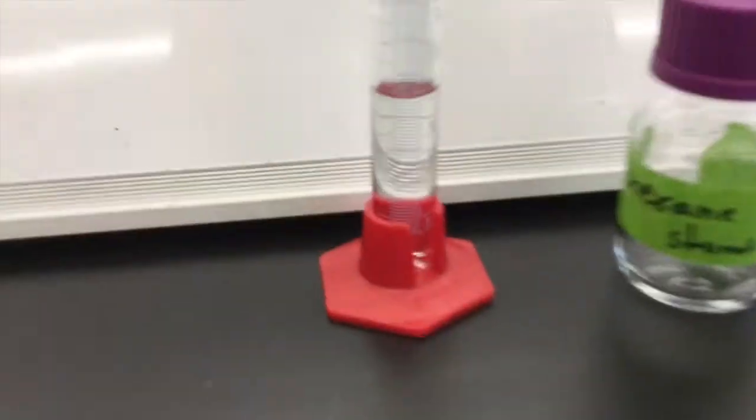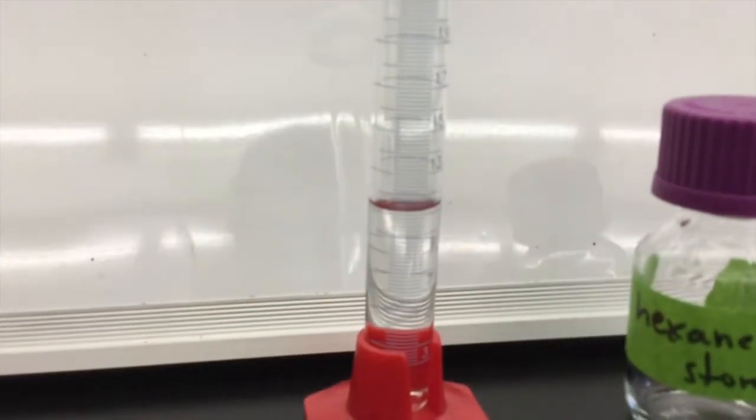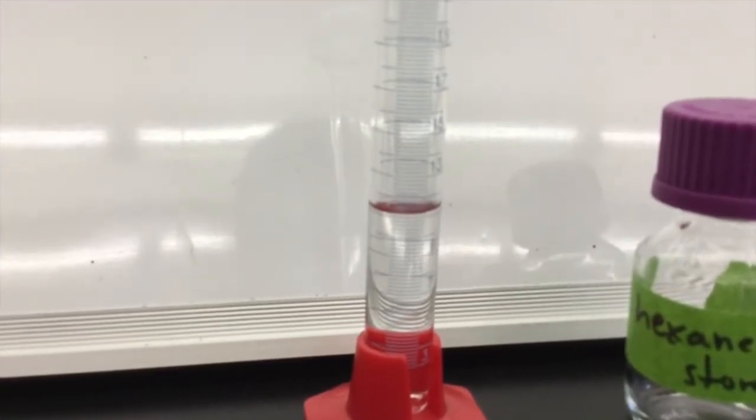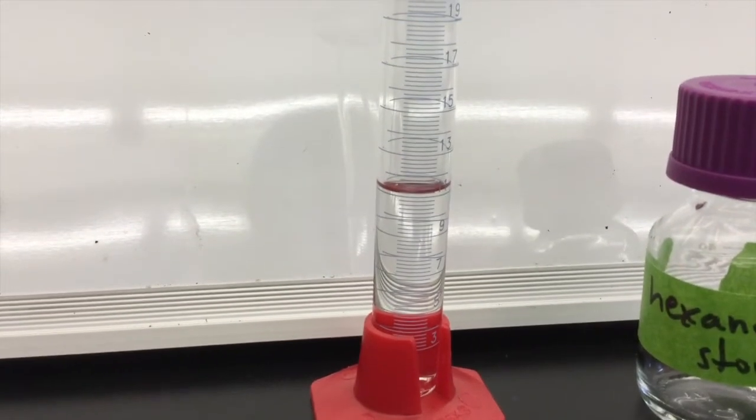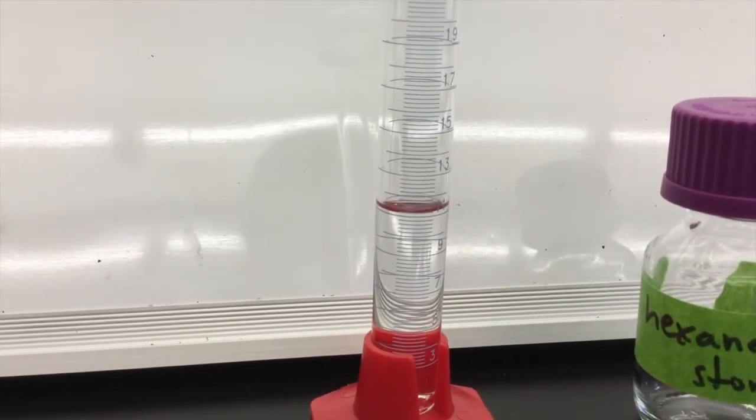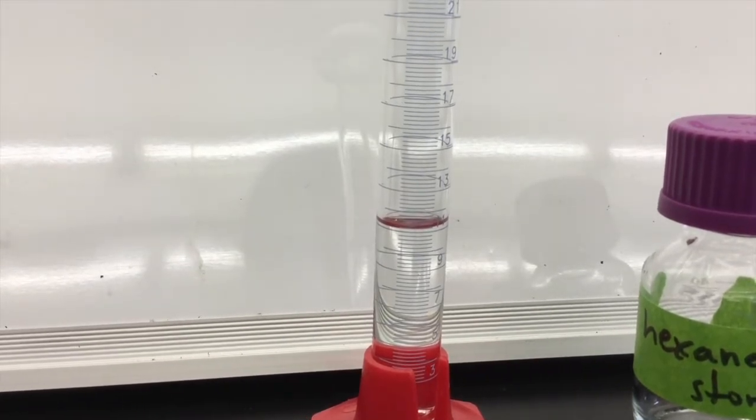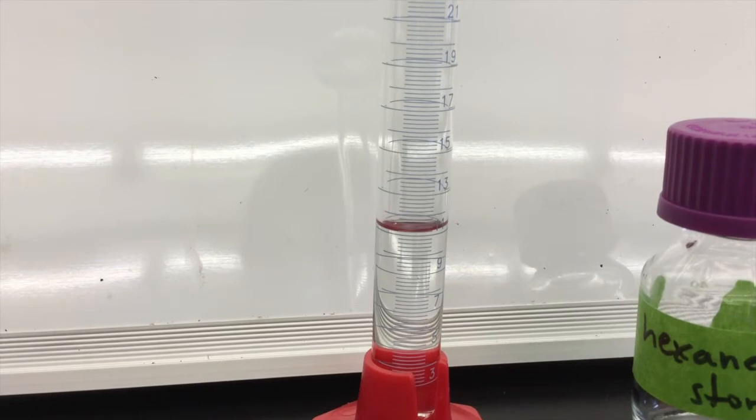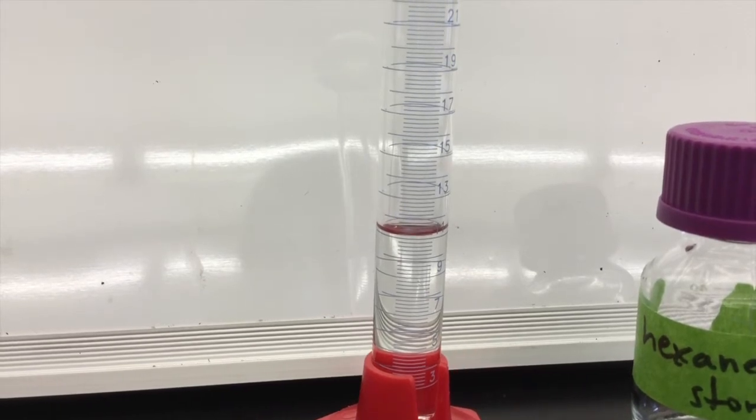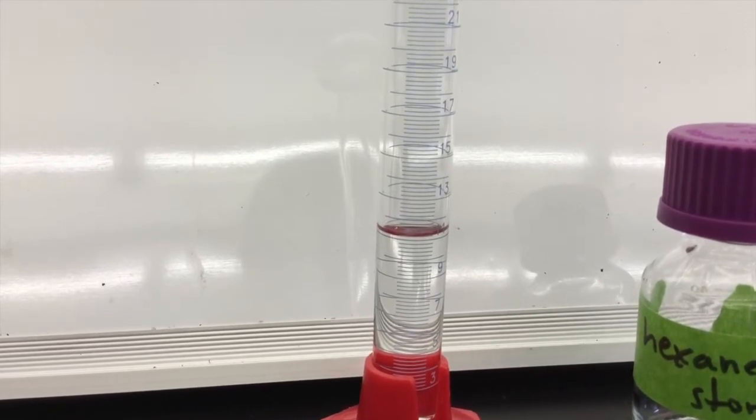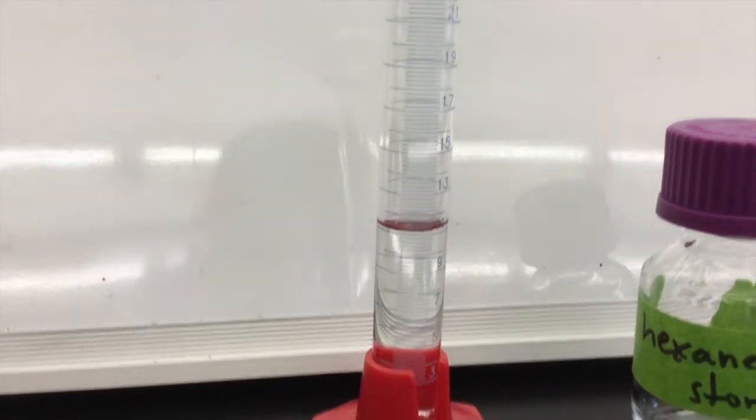You are going to pour about 10 milliliters of hexane into your graduated cylinder. You do not need exactly 10 milliliters. You can see here I have about 11 and that is fine, but you do want to make sure that you record the exact amount using proper significant figures. Make sure that you move to the appropriate eye level in order to see what the measurement is.